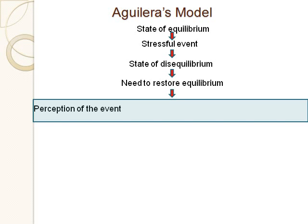Next, consider control — was the problem controllable or uncontrollable? Was it completely random or could it have been avoided? Depending on what the problem was, either attribution may be rational and appropriate.